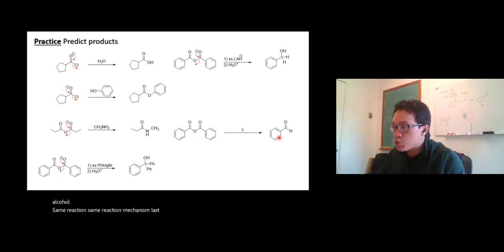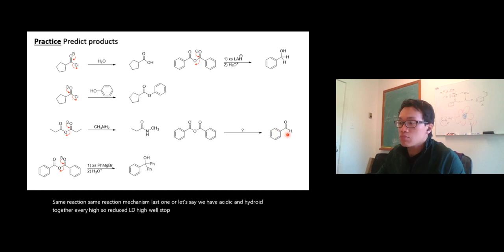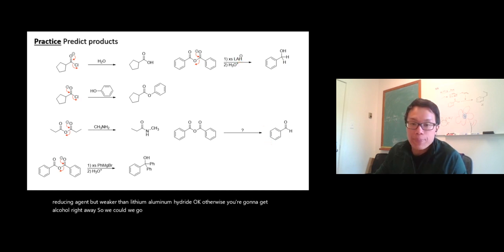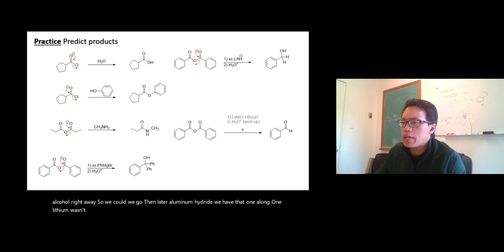Last one, let's say we have acid anhydride to get an aldehyde. So reduce to aldehyde, stop at aldehyde. It's going to be a hydride reducing agent but weaker than lithium aluminum hydride. Otherwise you're going to get alcohol right away. Weaker than lithium aluminum hydride. We have that one, the long one, lithium aluminum tri-tert-butoxy hydride. And then don't forget to work up at the end.